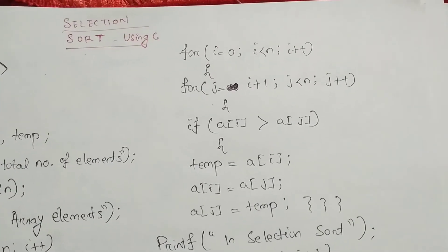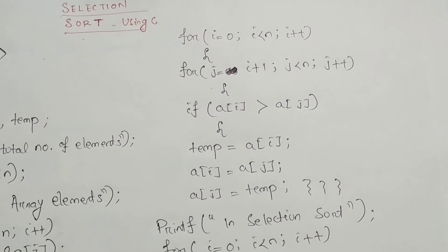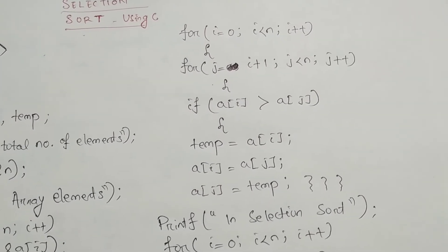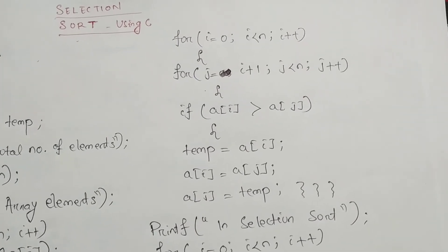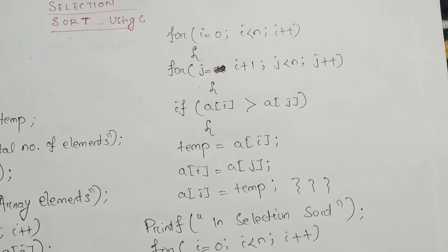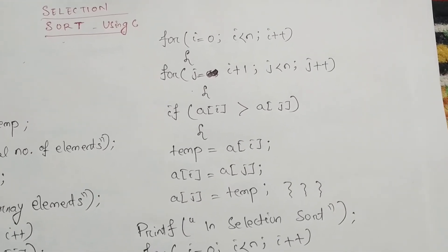Then here we are using two for loops. One for loop to compare the first element and second for loop is to compare the second element with the first element. So you can see here, for i value is 0, 0 less than n. So condition is true. Then it will enter into the inner loop.